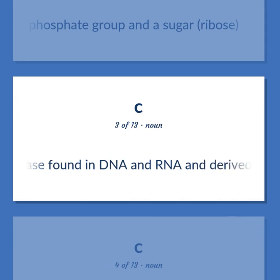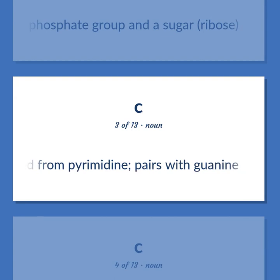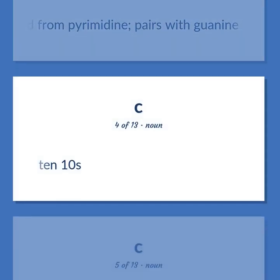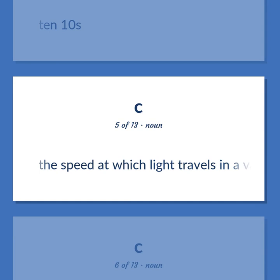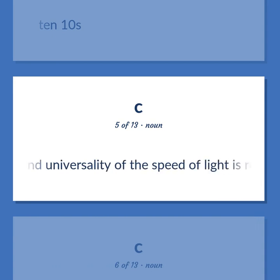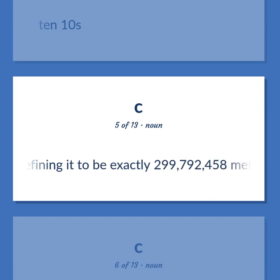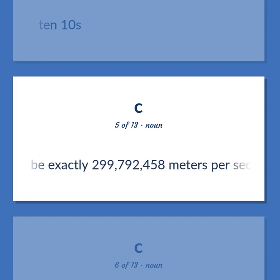A base found in DNA and RNA and derived from pyrimidine. Pairs with guanine. 10-10s. The speed at which light travels in a vacuum. The constancy and universality of the speed of light is recognized by defining it to be exactly 299,792,458 meters per second.